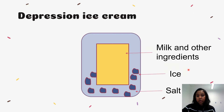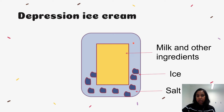Now I am going to explain the ice cream making process using this simple diagram. As you can see, the outer box represents the outer bag which contains ice and salt, and the inner box contains milk and other ingredients. Let's see how to apply the freezing point depression concept into this process.